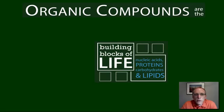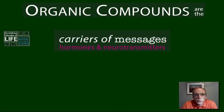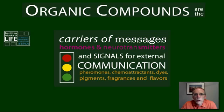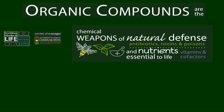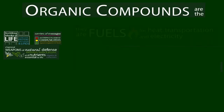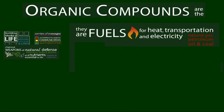But organic compounds are much more than that. They are the signals for internal regulation like hormones and neurotransmitters, and external communication — things like pheromones used by insects or chemo-attractants. They're also colors and pigments, fragrances, and flavors. Organic compounds are chemical weapons of natural defense, like natural antibiotics, toxins, and poisons. They're the nutrients essential to life, like vitamins and cofactors. And organic compounds are also fuels for heat, transportation, and electricity — things like natural gas, petroleum oil, and coal.